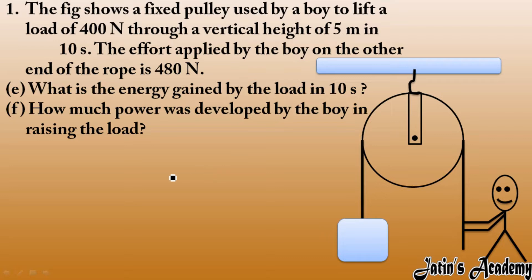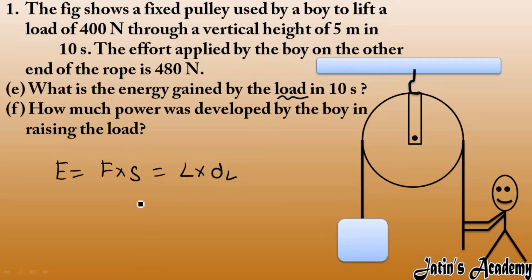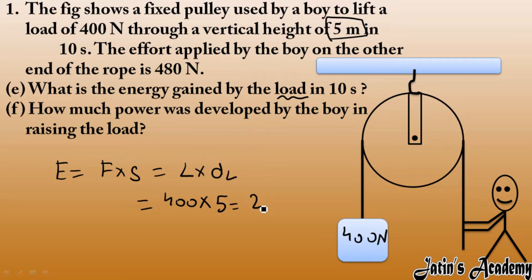Next, we calculate the energy gained by the load in 10 seconds. Energy is basically work done, so work done equals force into displacement. Force here is the load (400 Newton) and displacement of load is 5 meters. So energy gained equals 400 × 5 = 2000 joules or 2 kilojoules.